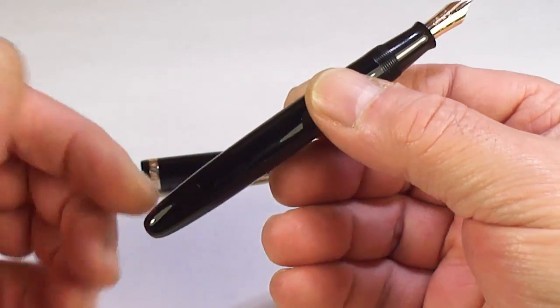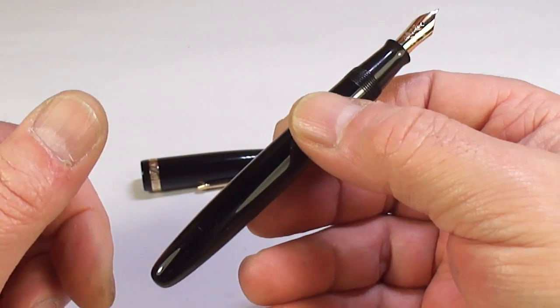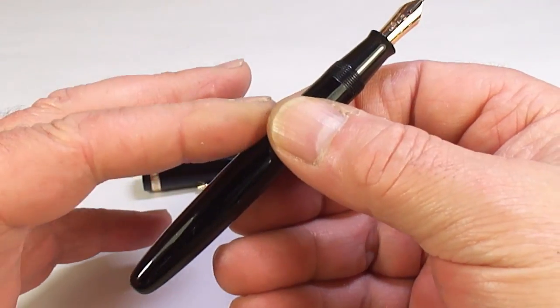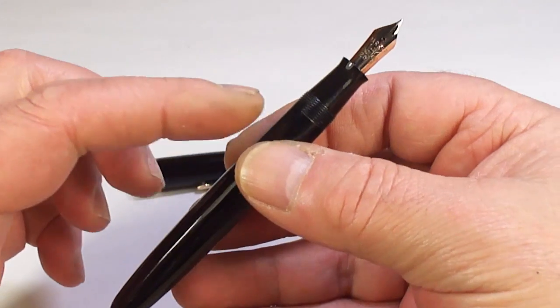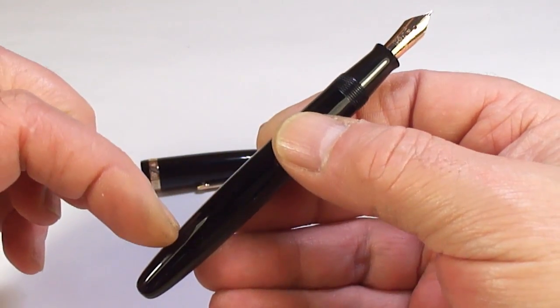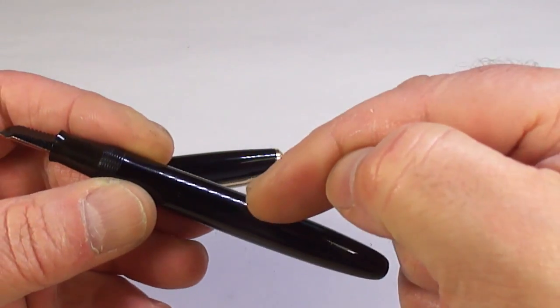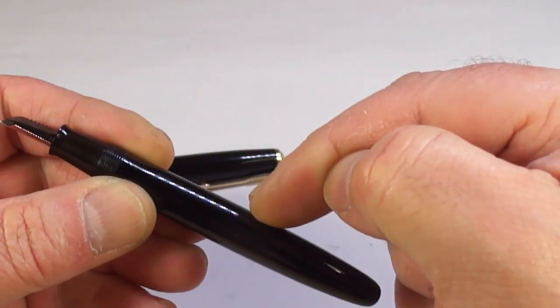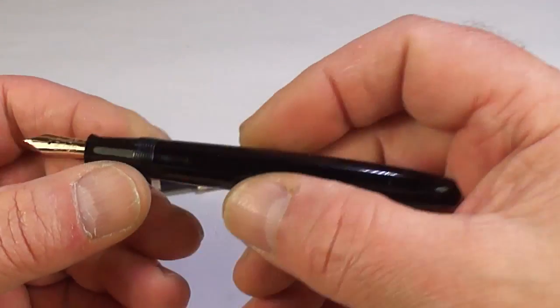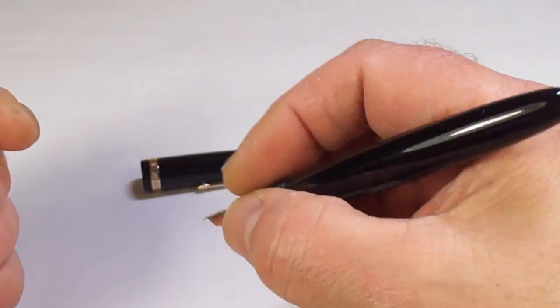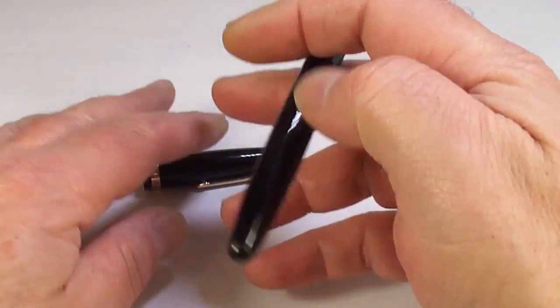This pen, the AF Duofolds, came out around 1948. The AF was introduced and then they stopped making the AF around 1953 when they introduced the aerometric system. So although it's 1951 on the barrel but 1949 on the clip, yeah that sounds quite reasonable as far as I'm concerned. Again, a lovely size pen even with my large hands.